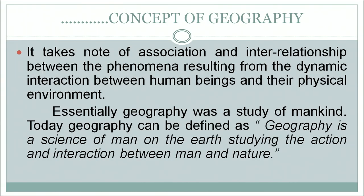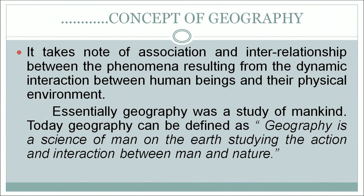The third characteristic of geography is that it takes note of the association and interrelationship between phenomena resulting from the dynamic interaction between human beings and their physical environment. This is the basic characteristic of geography today — how human beings are affecting the physical environment or how the physical environment is affecting human beings. Essentially geography was a study of mankind, and today geography can be defined as a science of man on the earth, studying the action and interaction between man and nature. There is definitely a purpose for the teaching of geography at upper primary level.